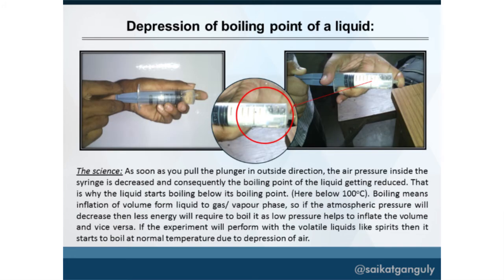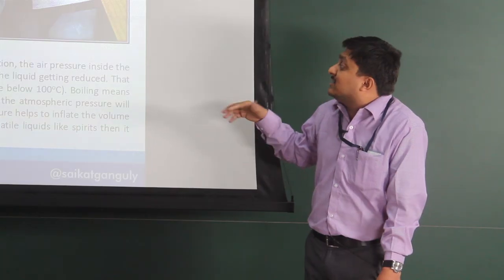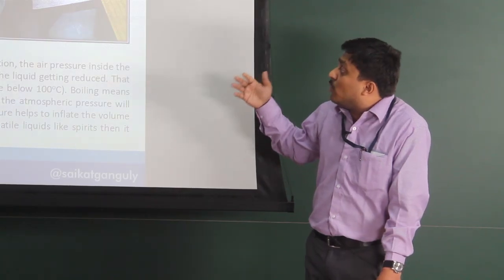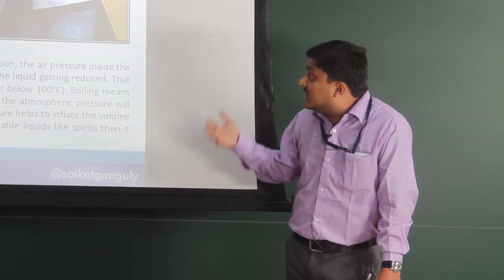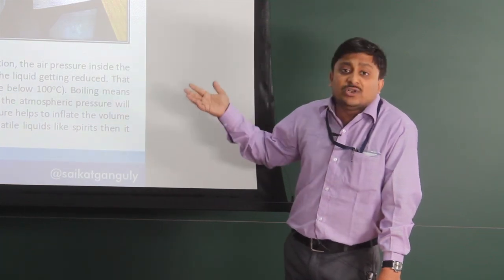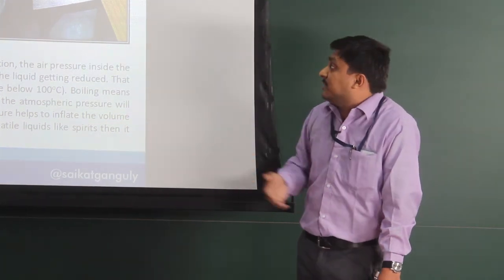This demonstrates the depression of boiling point of a liquid, also called Franklin's experiment. Whenever you pull the plunger, the inside air pressure drops, and thereby the boiling point of the liquid decreases and it starts boiling.